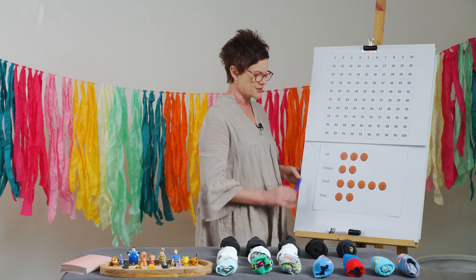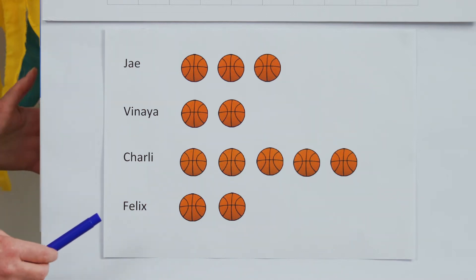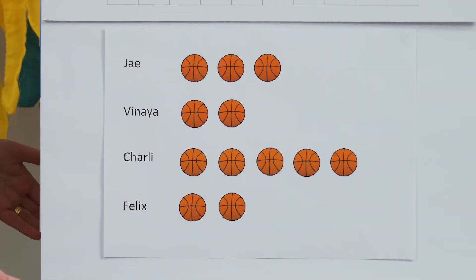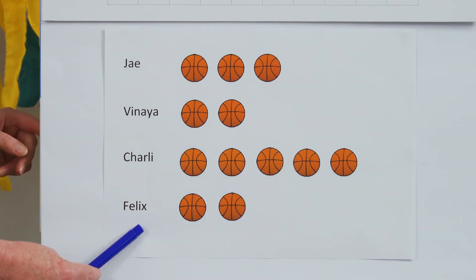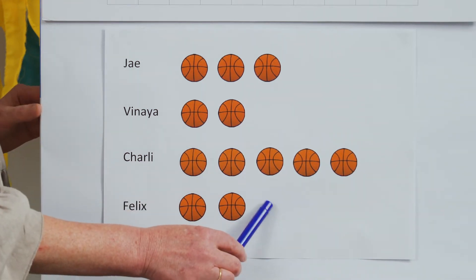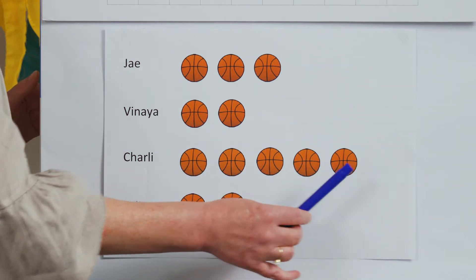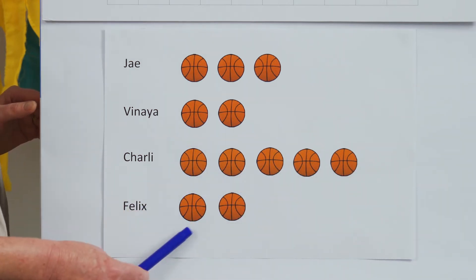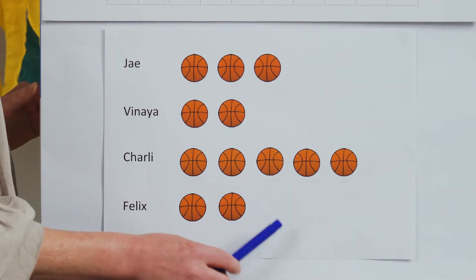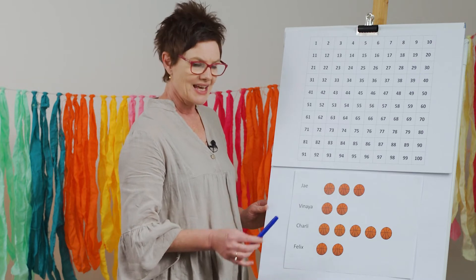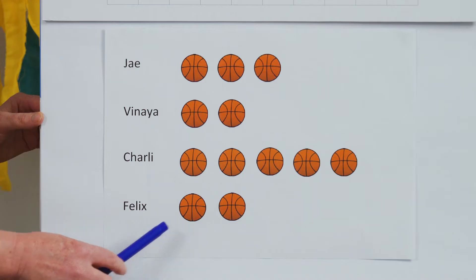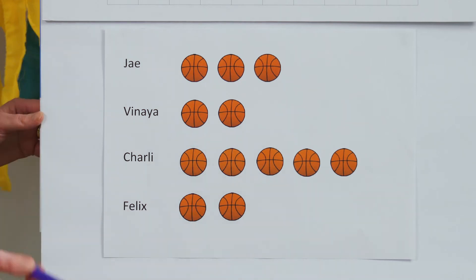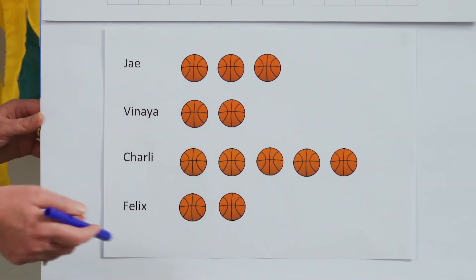Let's have a look at some questions around this data. My first question is: how many more games has Charlie played than Felix? What's the gap, what's the difference? Our larger number is five — five subtract two will give me the gap. The gap is three. Charlie has played three more games than Felix, or Felix has played three less games than Charlie. We can do those comparisons with our sets of data.